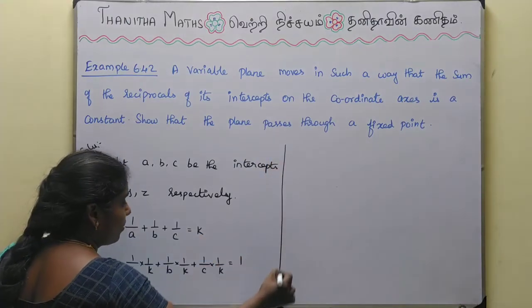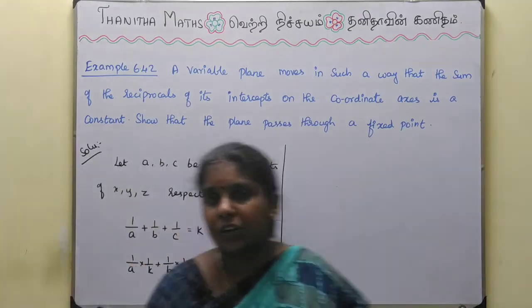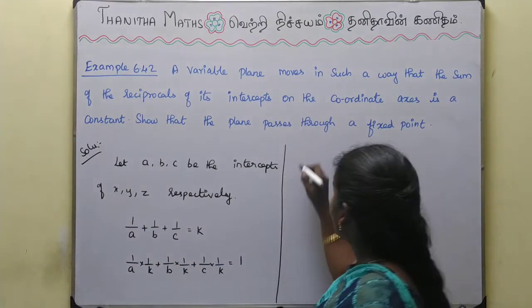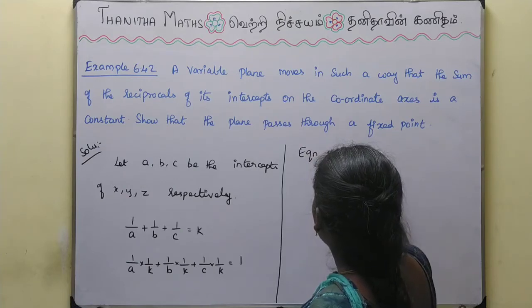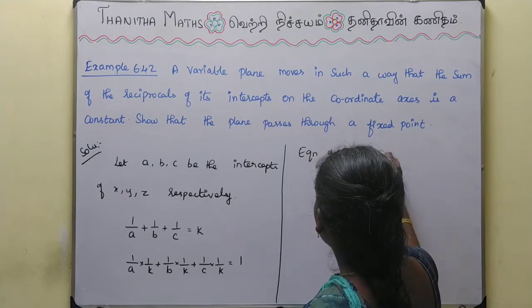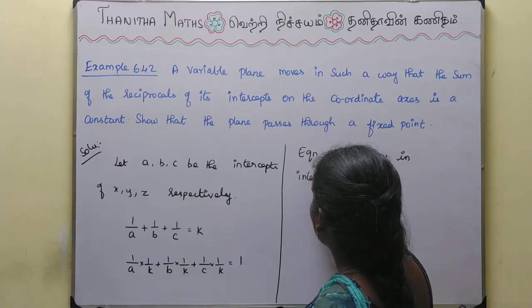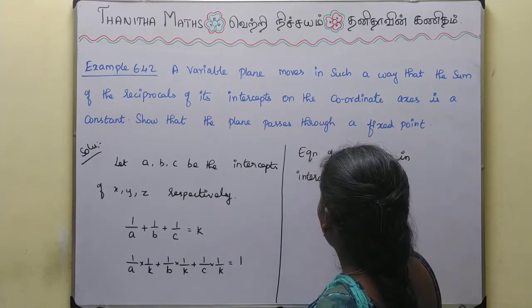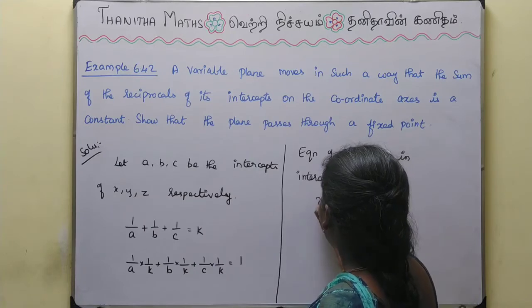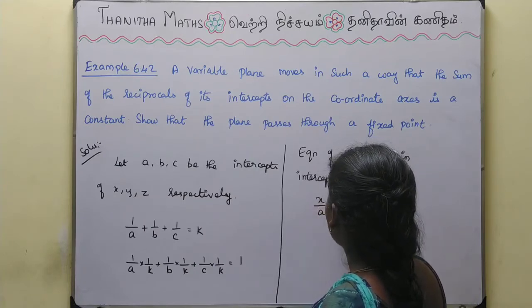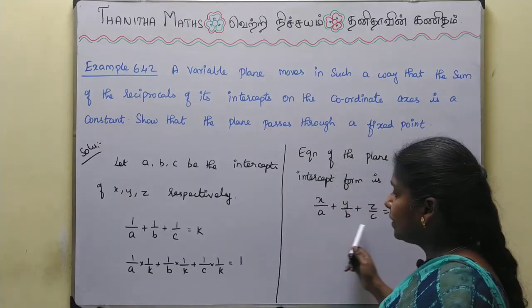Now we are going to use the equation of the plane in intercept form, which we learned in the introduction video. The equation of the plane in intercept form is: x/a + y/b + z/c = 1.